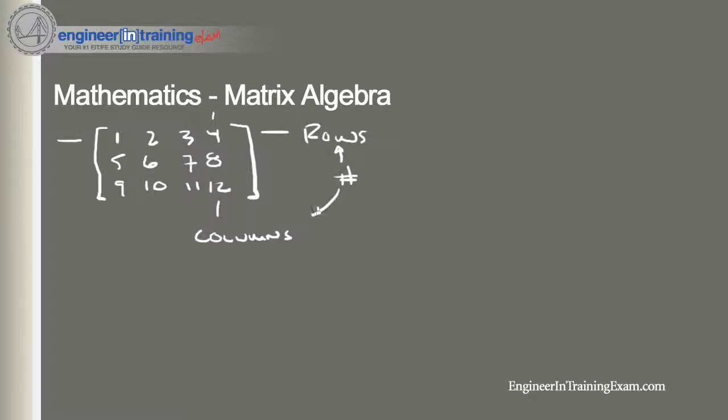So the number of rows and columns in a matrix is known as its order, or also you may have heard it as the dimension. Conventionally speaking, rows are listed first, followed by columns.